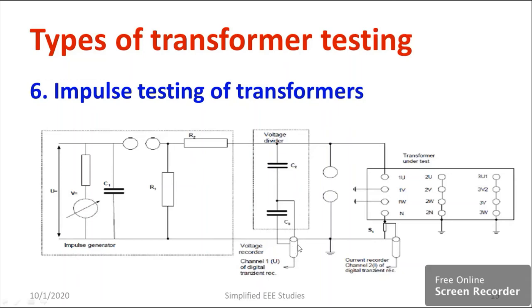You will be generating the impulse waveform with the help of the impulse generator. The output will be directly applied across the winding of the transformer. You are going to observe the waveforms — the applied voltage and output voltage are both measured and compared to see if there are any changes in the output voltage.